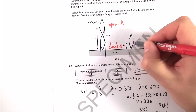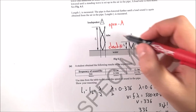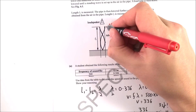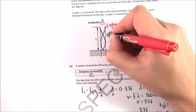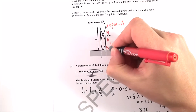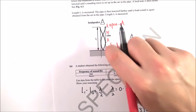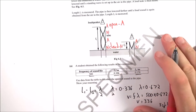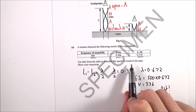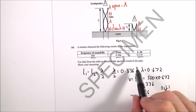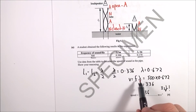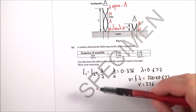This means the first resonance length is a quarter of a wavelength and the next is three-quarters of a wavelength. Drawing these in shows the pattern: anti-node, node, anti-node, node. That understanding really helps with the next part — calculating the speed of sound in the pipe using v = fλ.